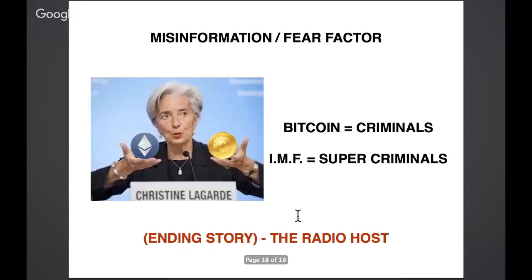The IMF head at Davos said 'Bitcoin is for criminals' — this coming from an institution that has overseen crisis after crisis, leaving debt-laden nations still in debt after decades. The World Bank and IMF have been around for years — what have they actually accomplished beyond window dressing? The world is going bankrupt, and yet they label Bitcoin as criminal.